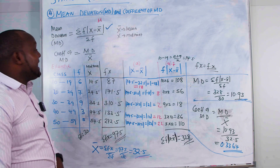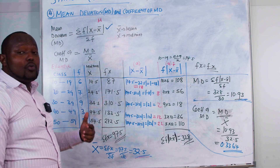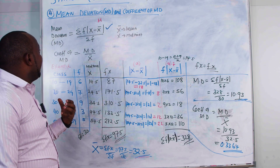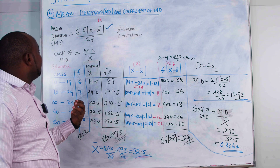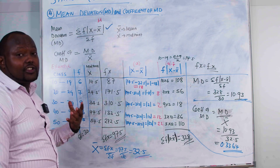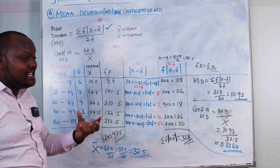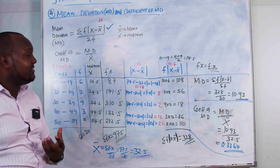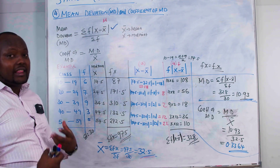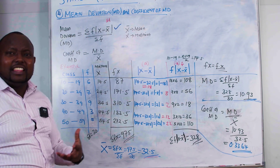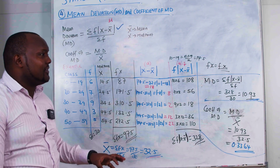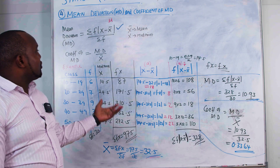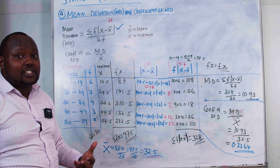In the next video, we are going to look at how we get the median. Remember the median relates to quartiles — the quartile deviation and interquartile range. We are going to look at those kinds of calculations. Thank you for watching.